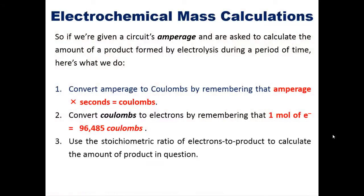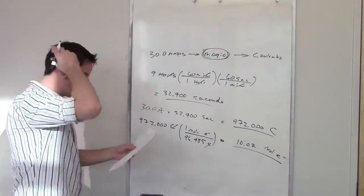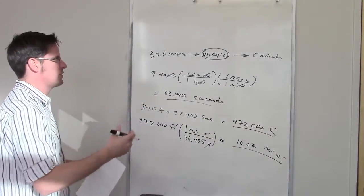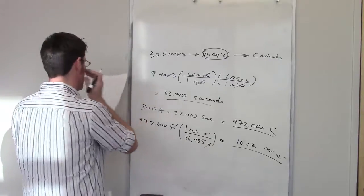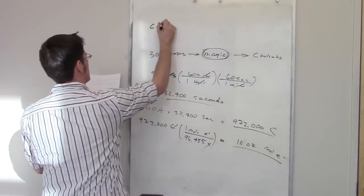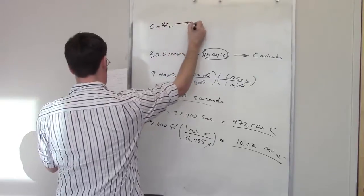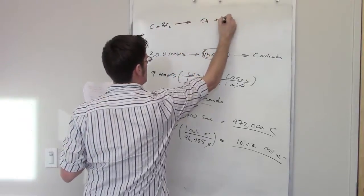Step three says, use the stoichiometric ratio of electrons to product to calculate the amount of product in question. In order to do this, we're going to have to write out our equation. So here's our actual reaction. It tells me that I've got calcium bromide being converted into calcium and bromine.